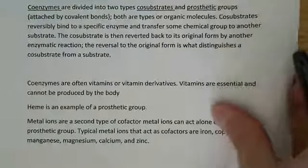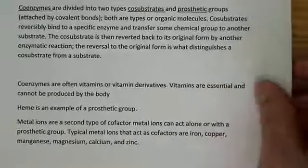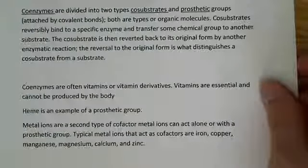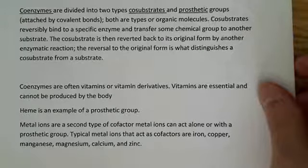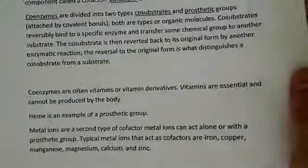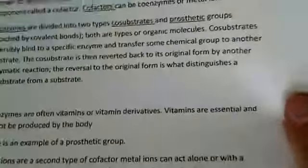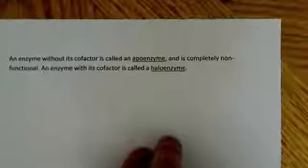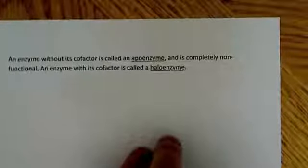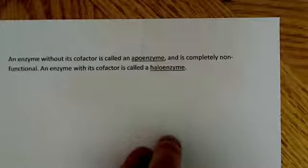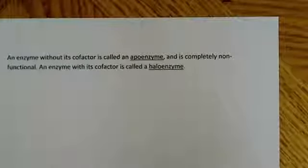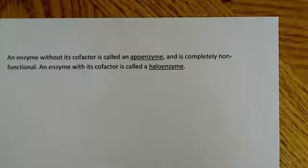With the cytochromes, for example, you can go from Fe2+ and then become oxidized to Fe3+. With hemoglobin, the heme group stays in the Fe2+ state. Finally, an enzyme without its cofactor is known as an apoenzyme and is completely non-functional, while an enzyme with its cofactor is called a holoenzyme.